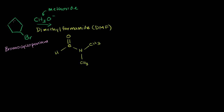Just to narrow things down, we'll think about it in the context of the last four types of reactions we've looked at. This might be an SN2 reaction, an SN1 reaction, an E2 reaction, or an E1 reaction. We're going to look at all the clues and figure out what's likely to occur, and then actually draw the mechanism for it.